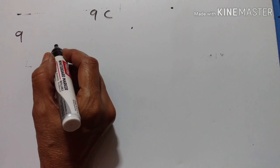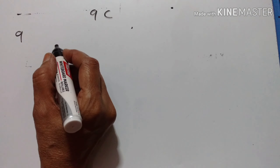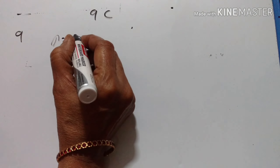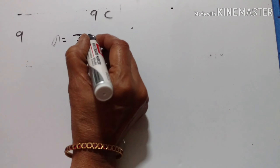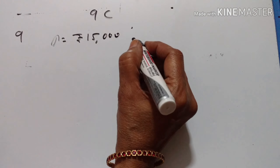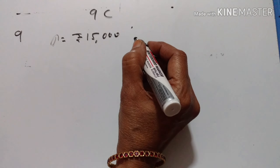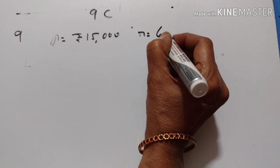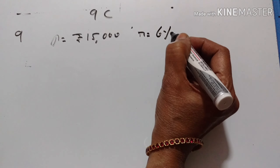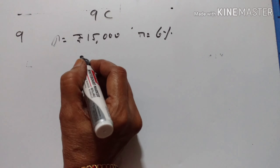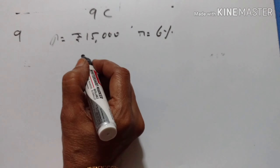9th problem. Calculate the compound interest for the second year on Rs. 15,000. P is equal to Rs. 15,000, invested at 6% per annum. Rate is equal to 6% per annum. We have to calculate the compound interest for the second year.